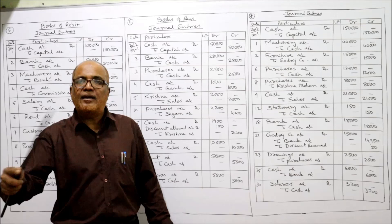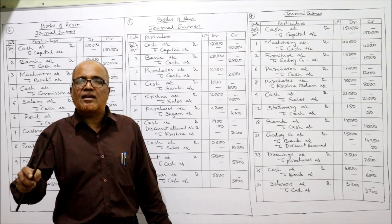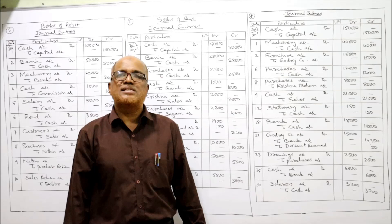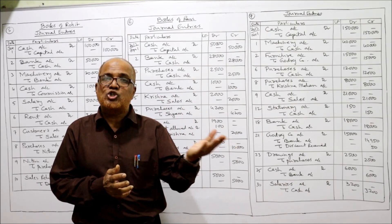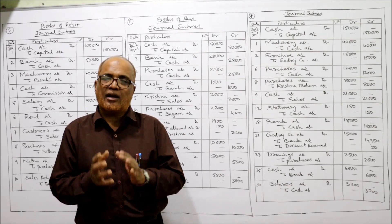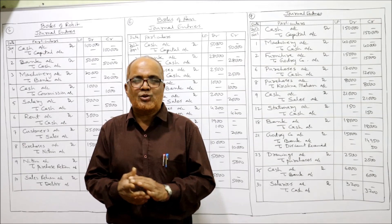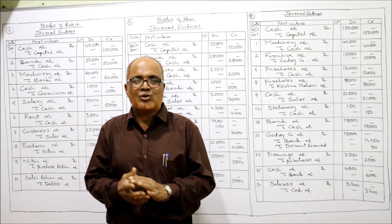Goods withdrawn for personal use — when the owner withdraws goods it is called drawings. Entry: drawings account debit to purchases account. Cash withdrawn from bank — cash account debit to bank 6,000. Being the cash withdrawn from bank. Last: paid salaries — salaries account debit to cash 3,200. Being salaries paid. That's all — this is the end of problem number seven. Totally seven main problems, apart from 14 short problems, completed on journal entries. If you're satisfied with my lecture, give a like, share the channel, and don't forget to subscribe.